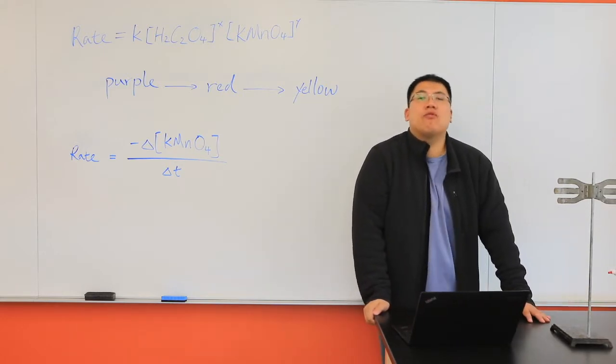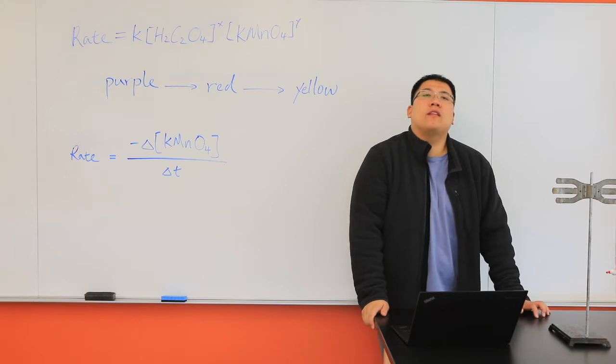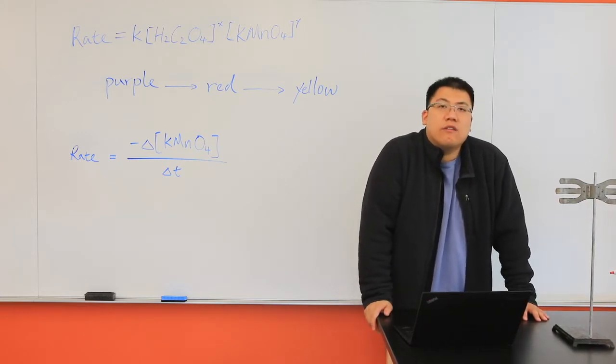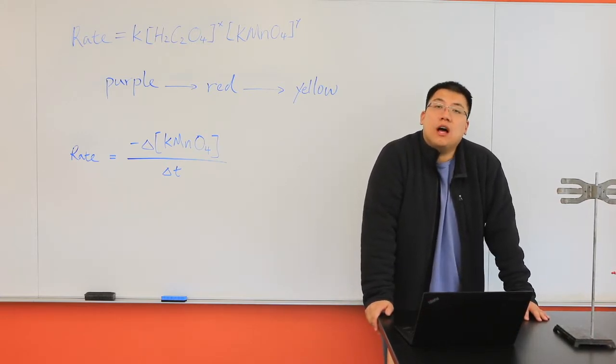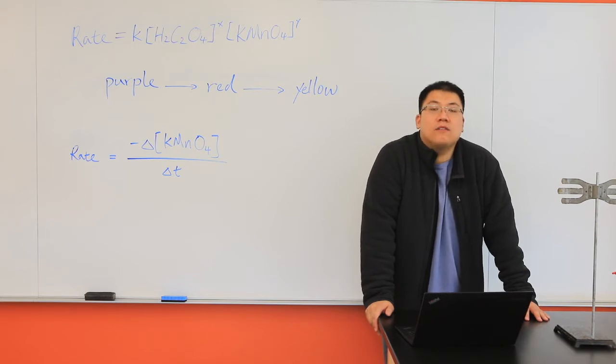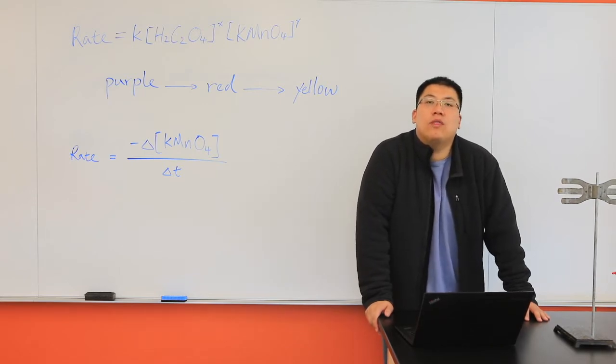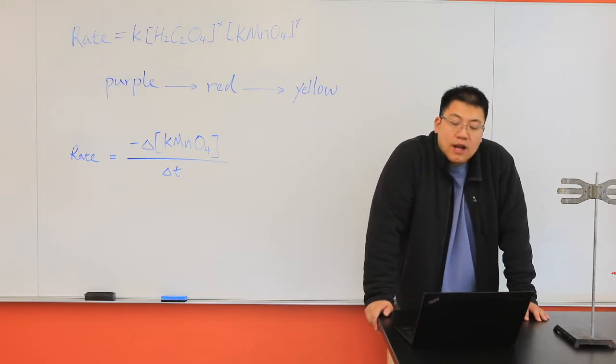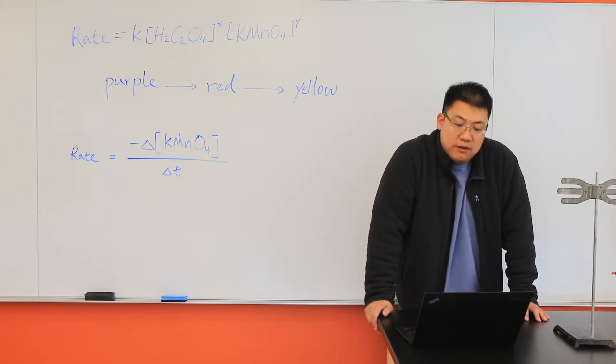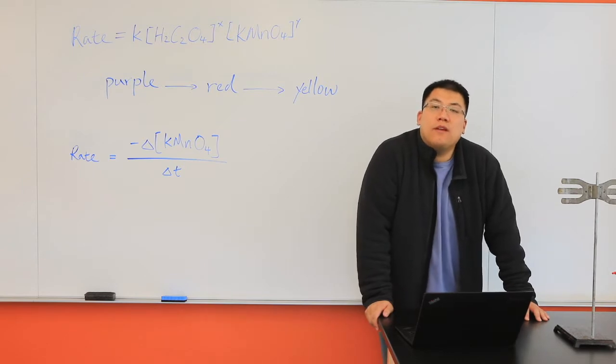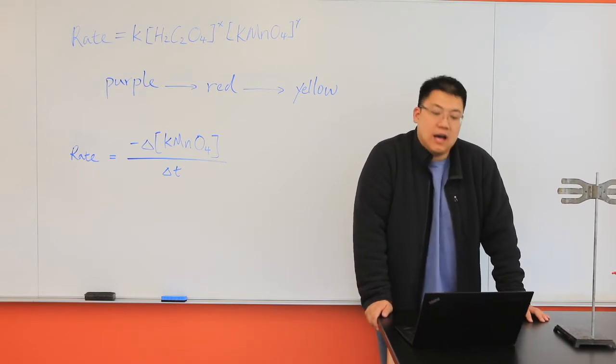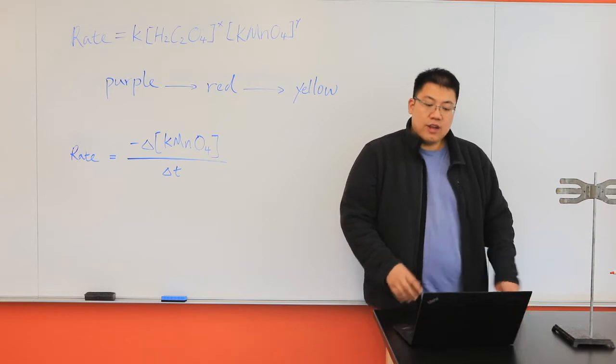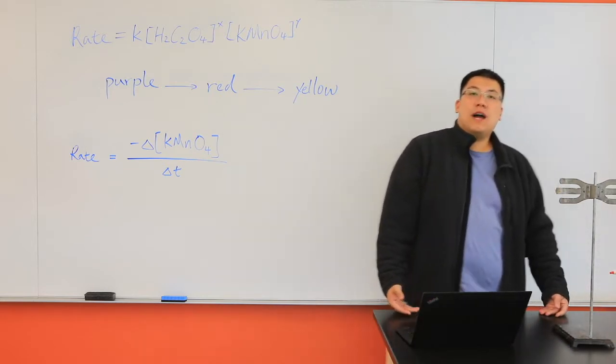We know that rate of reaction is often affected by a few factors. For example, the concentration of the reactants, as well as the temperature when the reaction takes place. If one of the reactants is colored in this experiment, we can visually observe its initial presence as well as its disappearance as the reactant is consumed in the reaction.